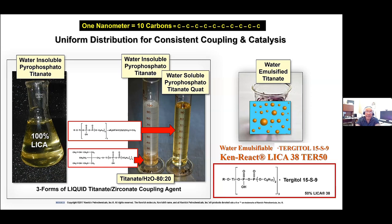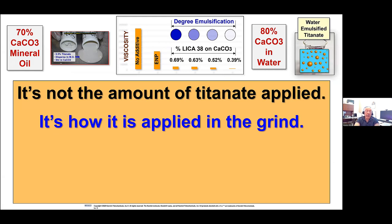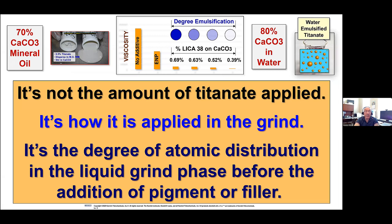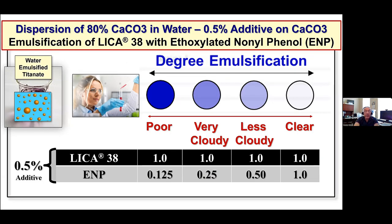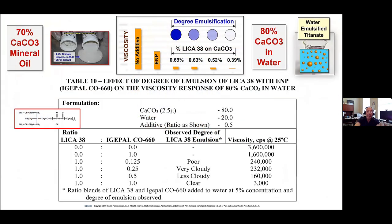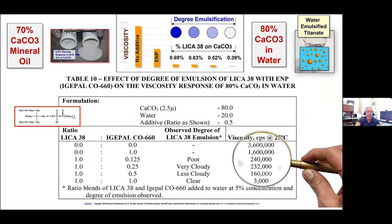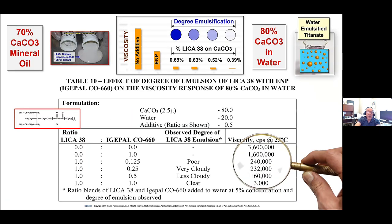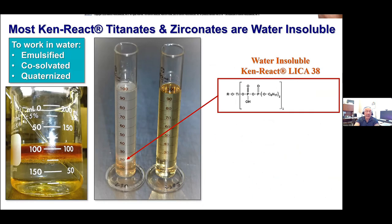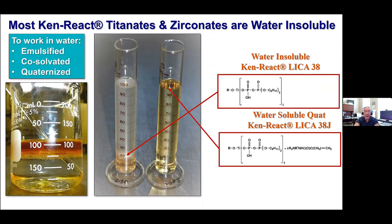Solubility in the organic phase is important, or emulsification. We did a study of how important it is to get the coupling agent properly emulsified. As we mixed ethoxylated nonylphenol into the water and solubility like a Lyco-38, when we got to a one-to-one ratio we got a good emulsion. When you get that good emulsion and then look at 80% calcium carbonate in water, putting the coupling agent into the water phase first, look at the viscosity drop — from 3,600,000 down to 3,000 centipoise with just half a percent of the coupling agent, which was only 50% active, so only one-quarter percent of titanate is doing that viscosity drop.